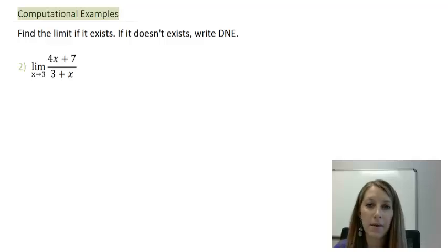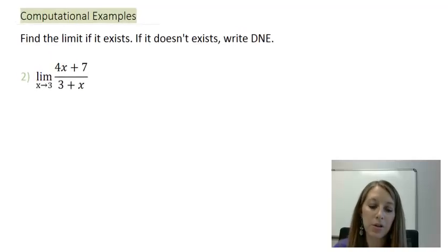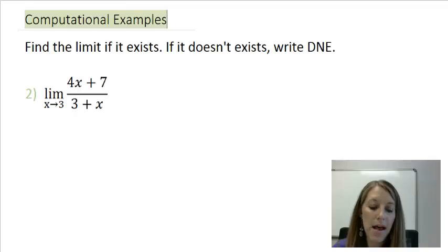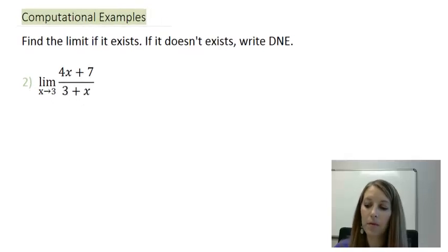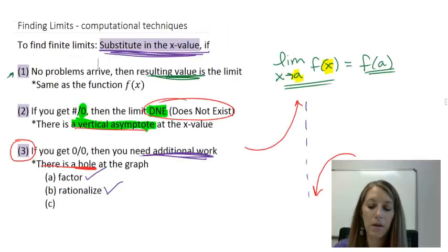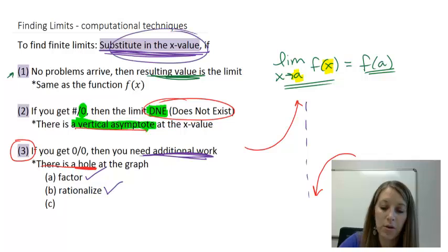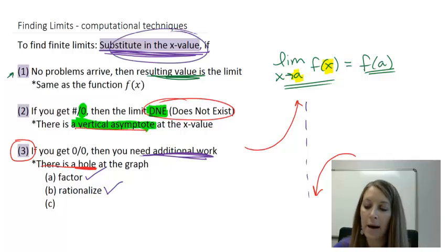Let's look at a second example of how to do these computationally. I have the limit as x is approaching 3 of 4x plus 7 over 3 plus x. I suggest that you pause the video and see if you can come up to the answer with this one on your own. If I go back to my steps, the first thing that I do is I substitute in my x value, and I see what happens from there.